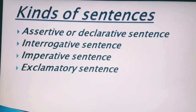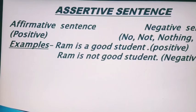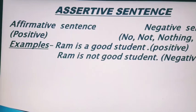Now let's discuss what is an assertive or declarative sentence. There are two kinds of assertive sentences: first is affirmative and second is negative. Negative sentences kya hote hain? Jinmein no, not, nothing, never — matlab jinmein na waali cheezein aa rahi hon, jinmein aapko negativity show ho rahi ho.